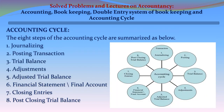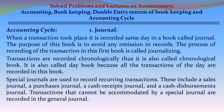The accounting cycle consists of eight steps: 1. Journalizing, 2. Posting Transaction, 3. Trial Balance, 4. Adjustments, 5. Adjusted Trial Balance, 6. Financial Statements, 7. Closing Entries, and 8. Post-Closing Trial Balance.